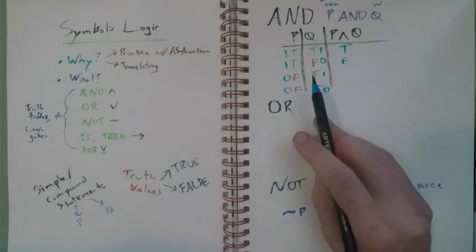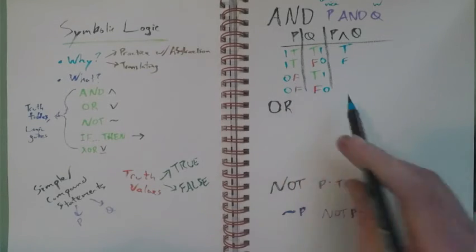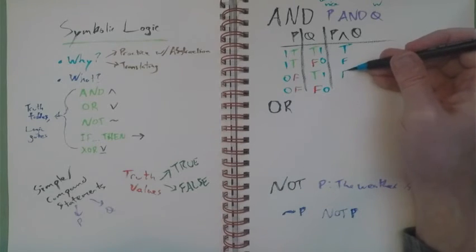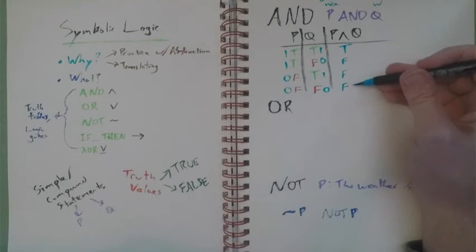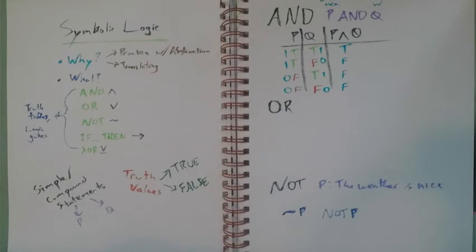But in the second row, it is not nice weather and a Wednesday. For the third row, it's bad weather and a Wednesday, so it is not nice weather and a Wednesday. And of course, the last one is also false, because neither of them are true.